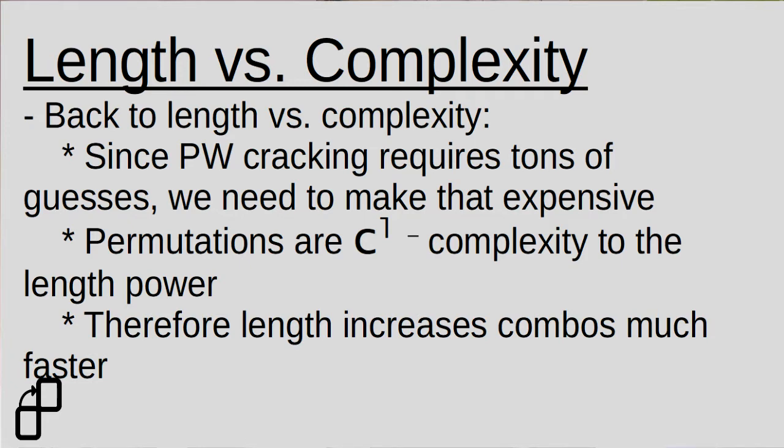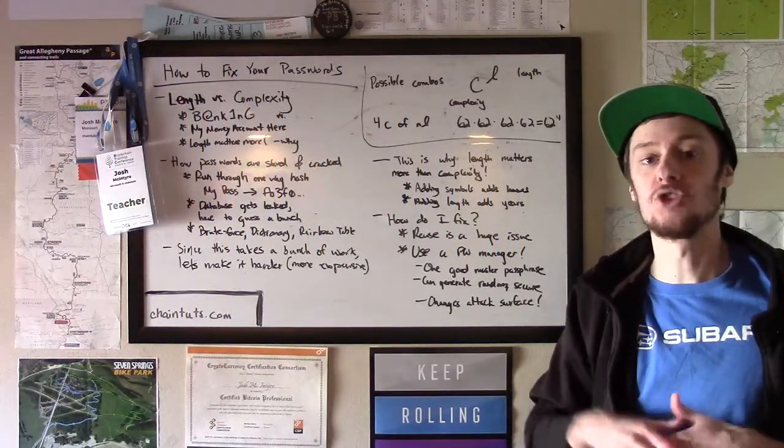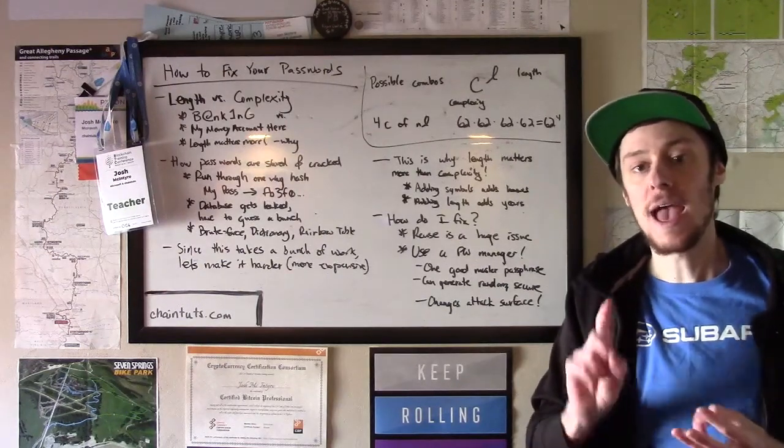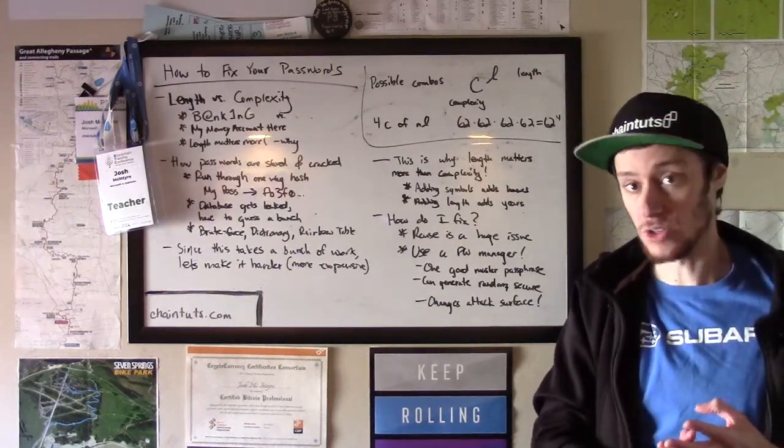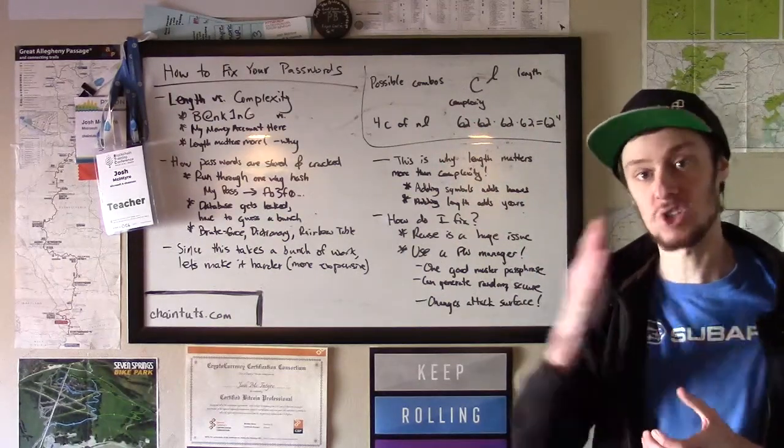let's say we have a four character password, and that password is comprised of just numbers and letters. So in the space of lowercase, uppercase, and number characters, that is 62 possible characters for each slot in the password.